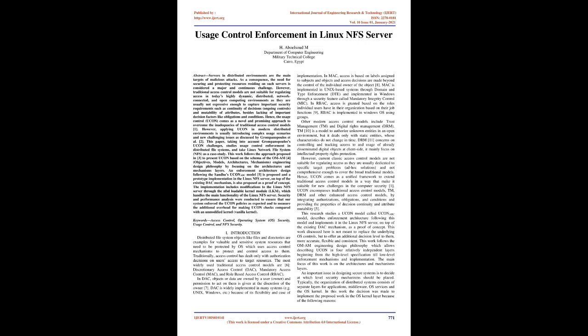Introduction: Distributed file system objects like files and directories are examples of valuable and sensitive system resources that need to be protected by the OS, which uses access control mechanisms to protect and control access to them. Traditionally, access control has dealt only with authorization decisions on users' access to target resources. The most widely used traditional access control models are: discretionary access control (DAC), mandatory access control (MAC), and role-based access control (RBAC). In DAC, objects or data are owned by a user (owner), and permission to act on them is given at the discretion of the owner. DAC is widely implemented in many systems, e.g., Unix, Windows, etc., because of its flexibility and ease of implementation.